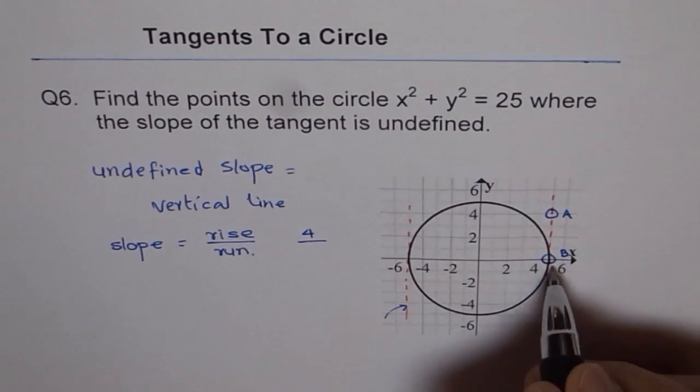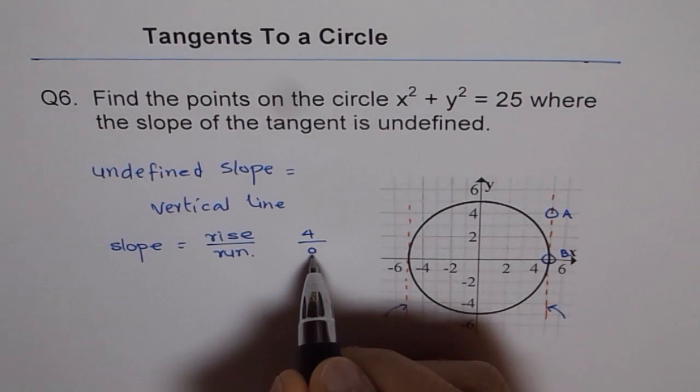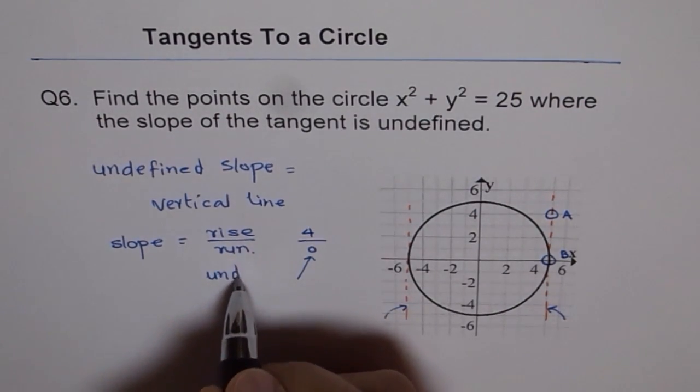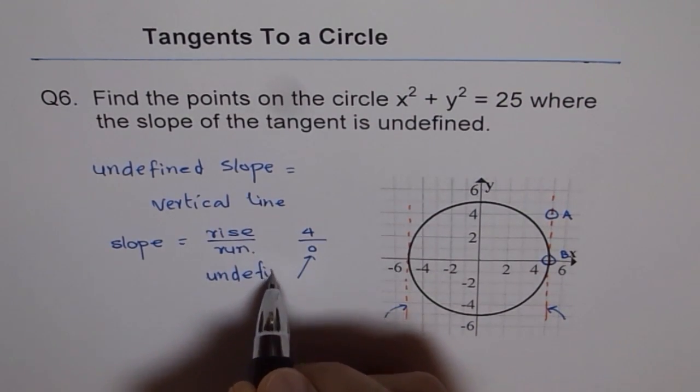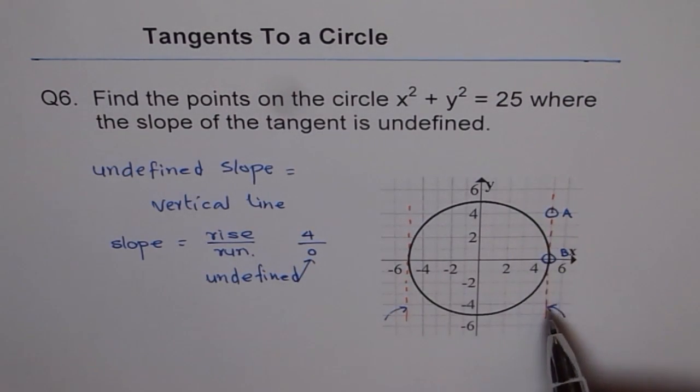And run, they do not really move horizontally. Run is 0. Anything divided by 0 is undefined. And that makes it undefined. So that is the reason we call it undefined. A vertical line.